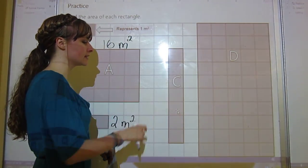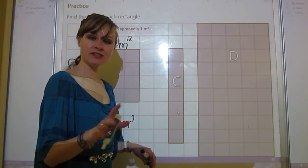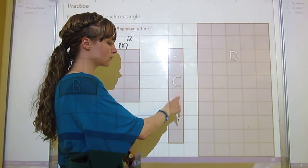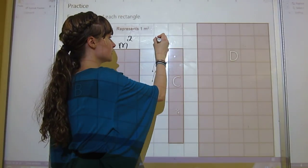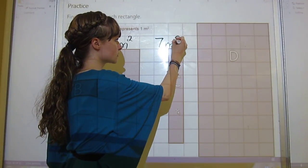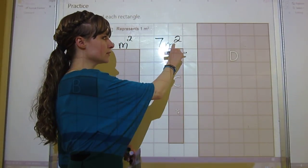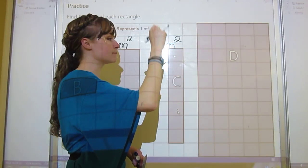Number or letter C is another one where it's just easier to count. So 1, 2, 3, 4, 5, 6, 7. This is 7 meters squared. Notice the 2 goes smaller and up.